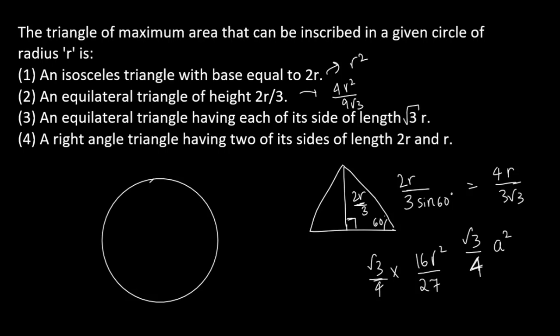The next one is an equilateral triangle having each of its side of length root 3R. So agar is case mein hum seedha vahi formula use ker sakte hain, this will give you 3 root 3 by 4 R square.